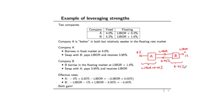So by constructing this swap, these two companies are able to leverage their relative strengths to get a deal which is better than what they could have achieved in either the fixed rate or the floating rate market — both of them end up gaining. The details of how the 3.95% gets set depends on supply and demand. But there is an implicit assumption being made: that Company A and Company B continue to exist and that neither of them is going to default. If one of these companies were to default, then this entire superstructure breaks down.